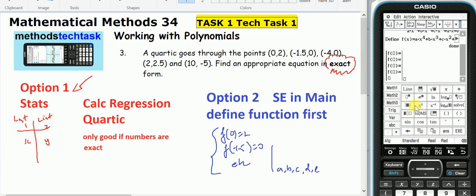And my first point is when x equals 0, y equals 2. And the second point is when x equals negative 1.5, y equals 0.